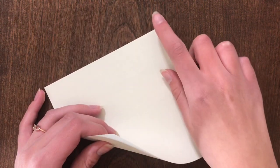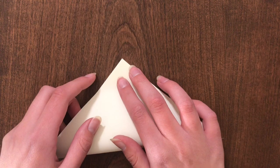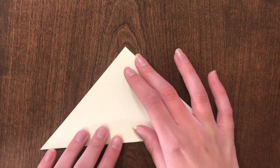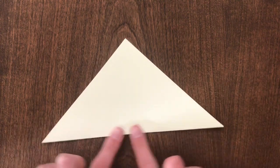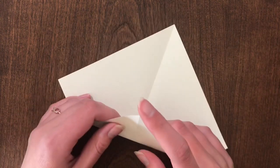Fold the paper in half diagonally, making sure that the corners are touching and your folds are nice and crisp. Unfold and fold diagonally opposite of the previous fold.